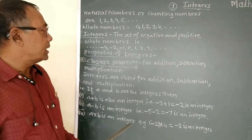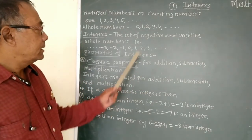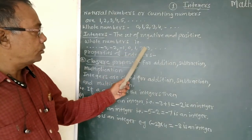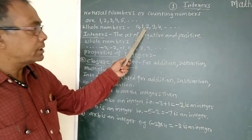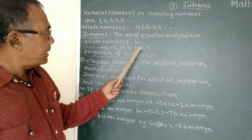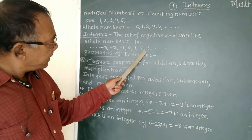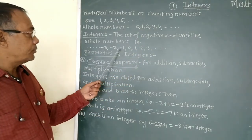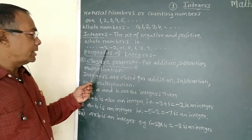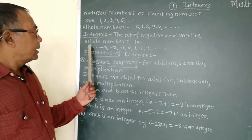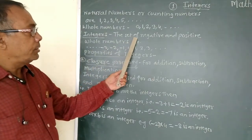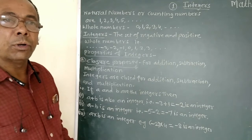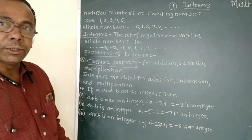Therefore, we can say that 0, 1, 2, 3, 4 are the whole numbers, and the negatives of these whole numbers — that is minus 1, minus 2, minus 3 — together form the integers. The set of negative and positive whole numbers is called integers.